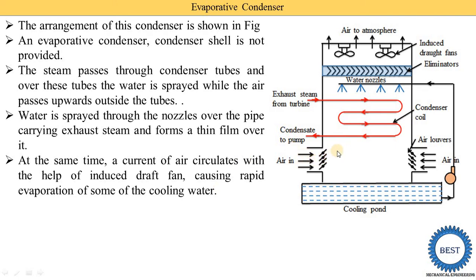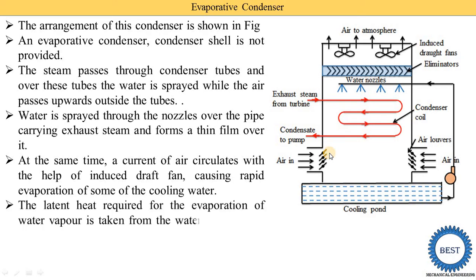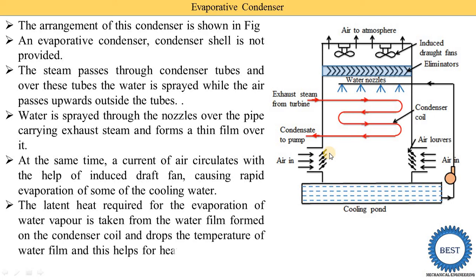Air moves from bottom to top while water moves from top to bottom, and a water film is produced on the condenser tubes. The latent heat required for evaporation of the water vapor is taken from the condenser coil — the same principle as cooling felt on human skin when sweat evaporates under a fan. Water is sprayed from nozzles, a water film forms on the condenser coils, and as air passes through, the water film starts to evaporate. Due to this evaporation, a cooling effect is produced, which converts the steam from the turbine into water — i.e., it is condensed.